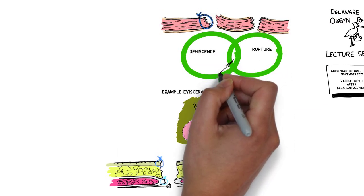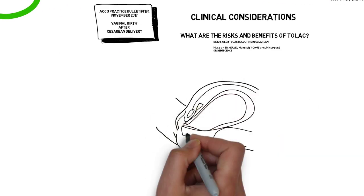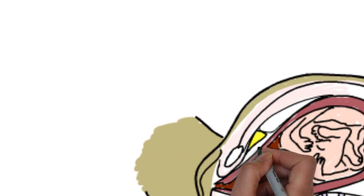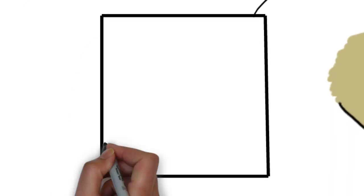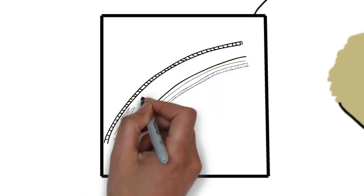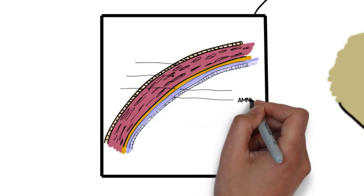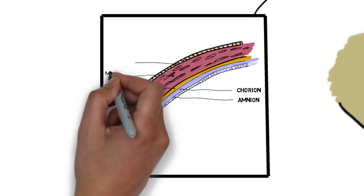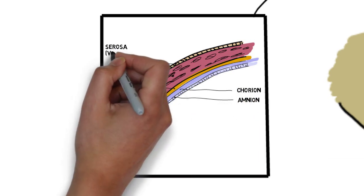Let's talk about the layers separating the fetus from the abdominal cavity. Assuming no overlying placenta in the area of the previous uterine scar, the layers are amnion, chorion, both of these are fetal, decidua, which is maternal, myometrium, and serosa, or visceral peritoneum.